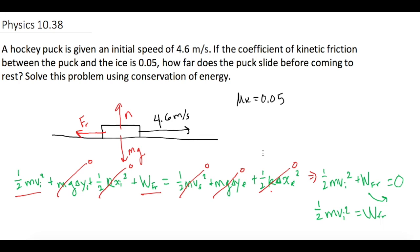Now let's talk about the work due to friction. The work equation is: W = F · d · cos(θ), where θ is the angle of the force with respect to the direction of motion.